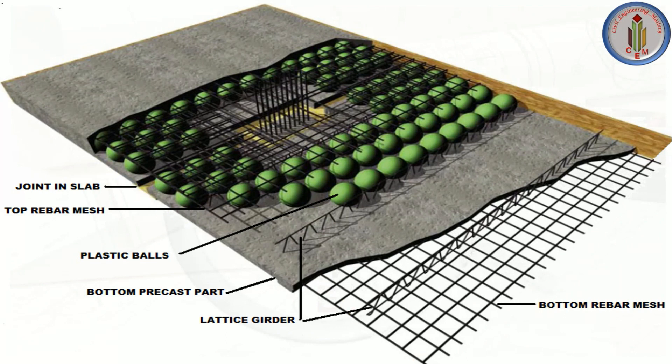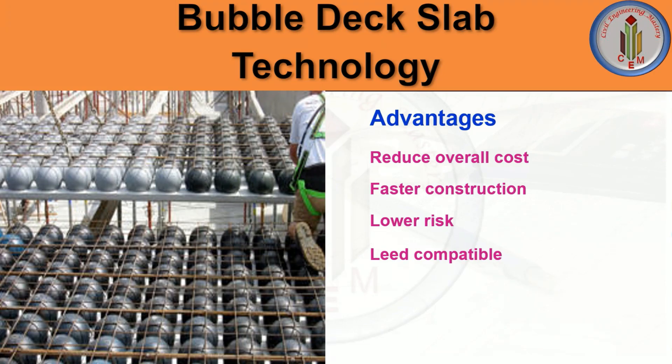These elements are stitched together using loose reinforcement placed between the joints. After that, concrete is poured and cured. This technique creates a biaxial slab system by providing structural continuity across the whole area of the slab.